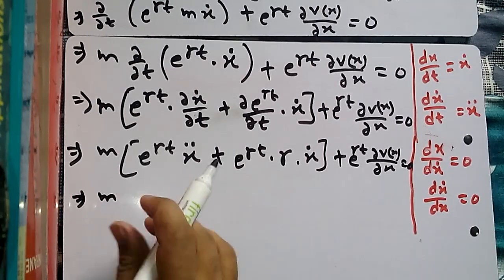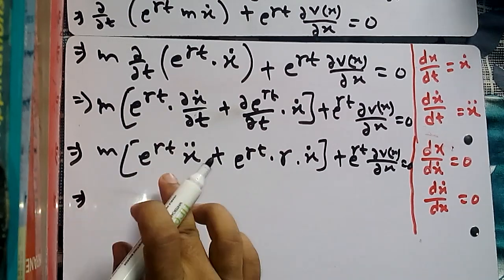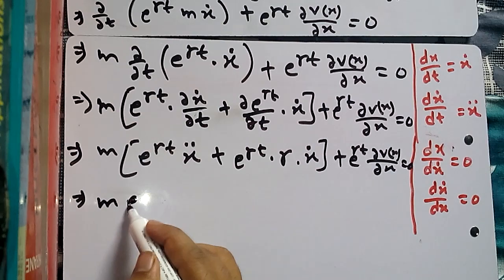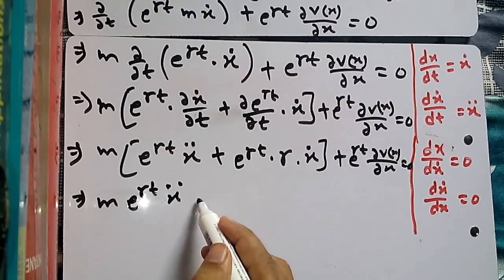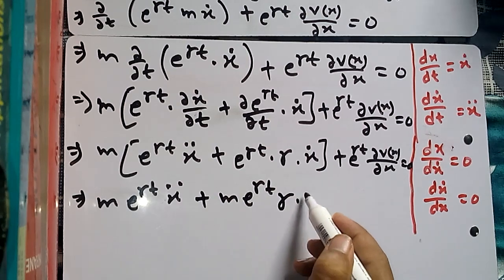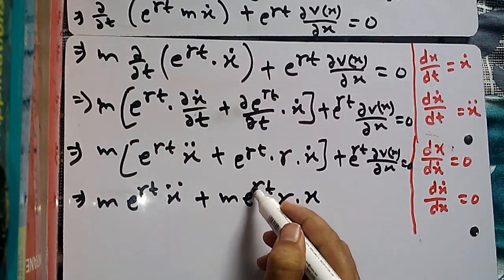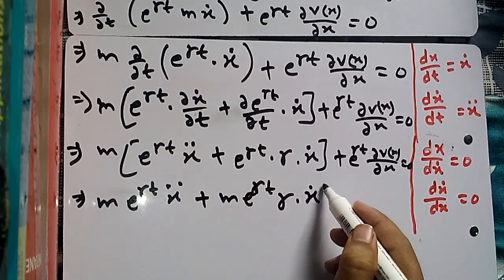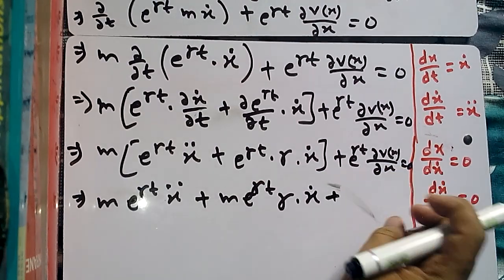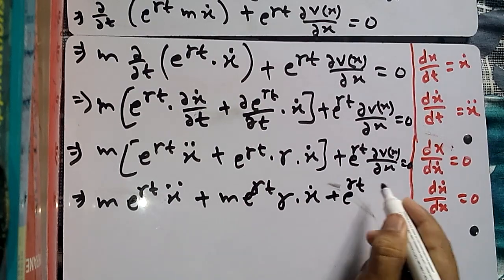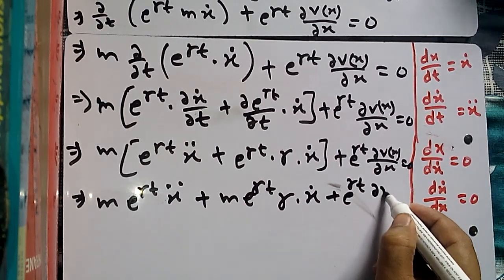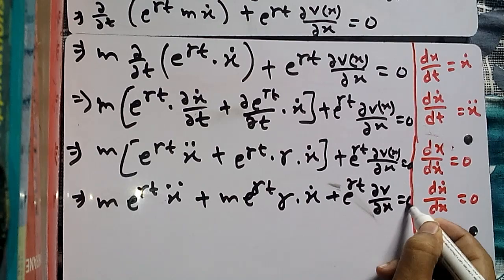Multiplying m through each term inside the bracket: m e^(gamma t) x-double-dot plus m e^(gamma t) gamma x-dot, plus e^(gamma t) ∂V/∂x = 0. We can now divide the entire equation by e^(gamma t), since it is nonzero, leaving: m x-double-dot plus m gamma x-dot plus ∂V/∂x = 0.